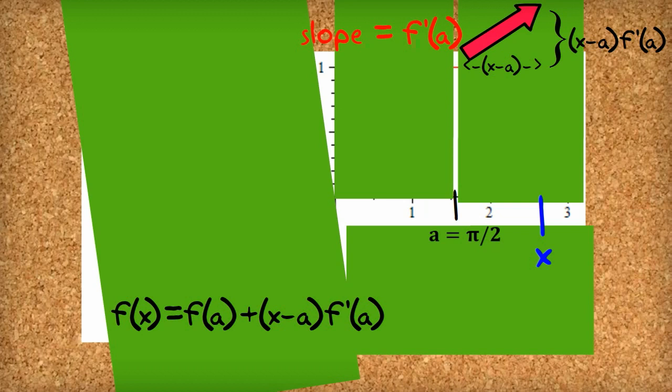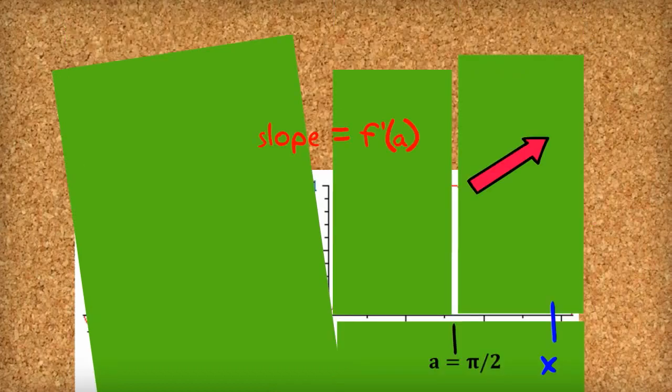So then the next student says, ah, but I've learned about the second derivative. And if the second derivative is positive, that means the slope will increase when we go from a to x. And so f of x will be even higher. It will be up here somewhere. Similarly, if the second derivative is negative, then the slope will start to decrease. And f of x will be down here somewhere.